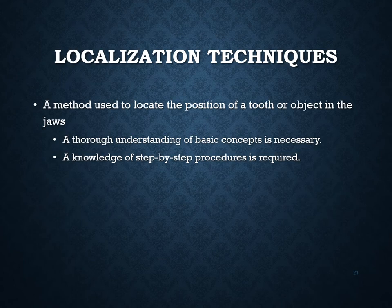Localization techniques, found on page 236, are a method used to locate the position of a tooth or object in the jaws. This is a fascinating aspect of radiography — you get to act as a detective figuring out where things are in relation to your images. The key concept is that dental images are two-dimensional pictures of three-dimensional objects, so depth is not depicted. An object may be closer or farther away than it appears.